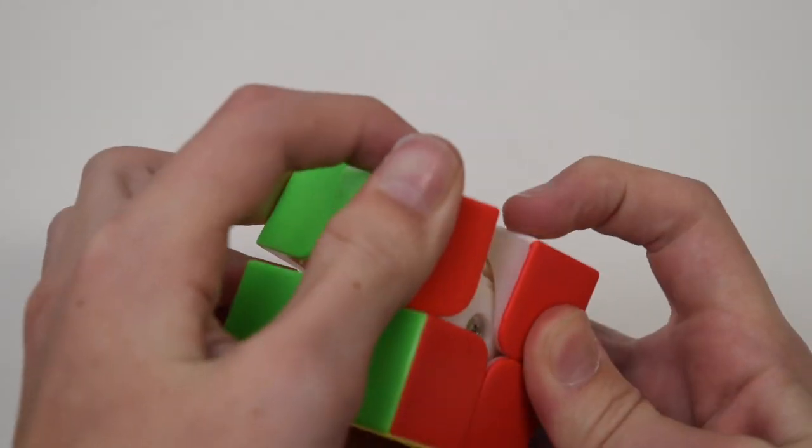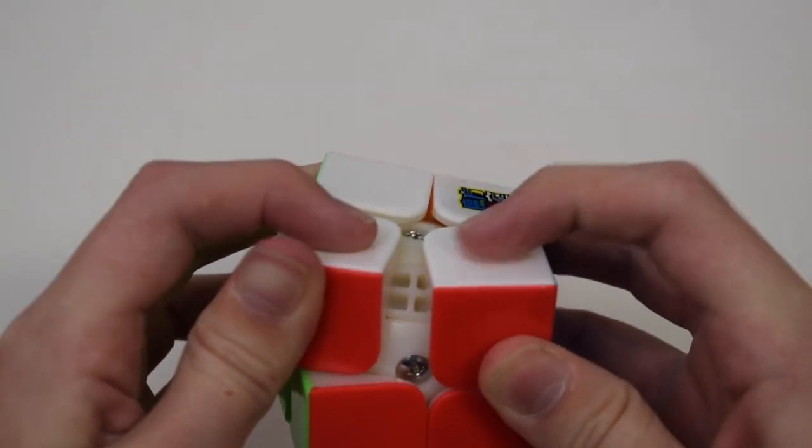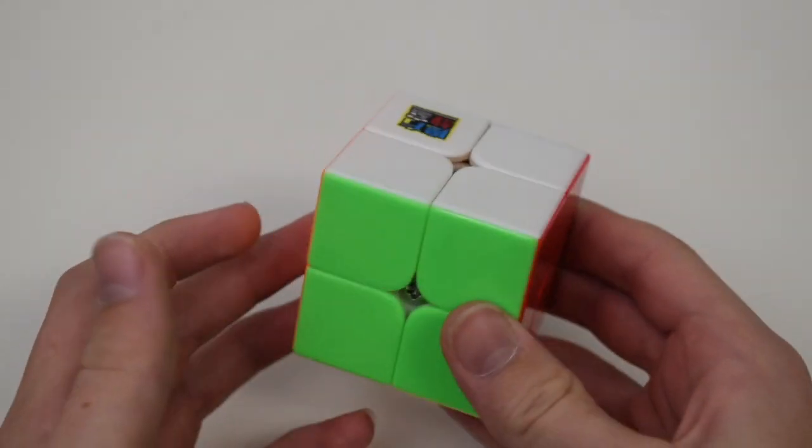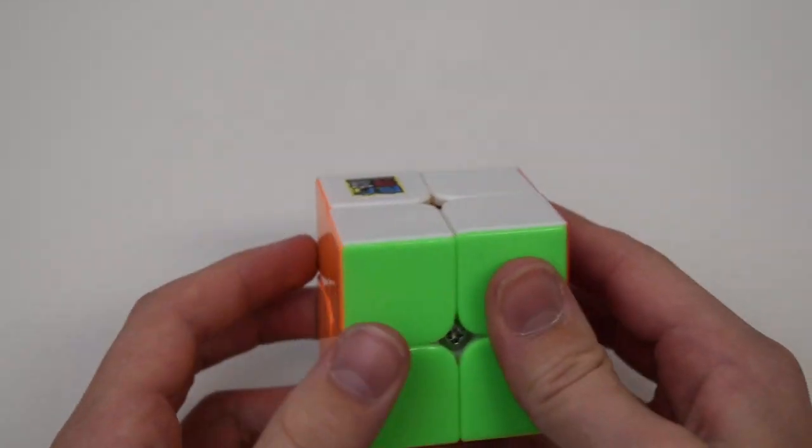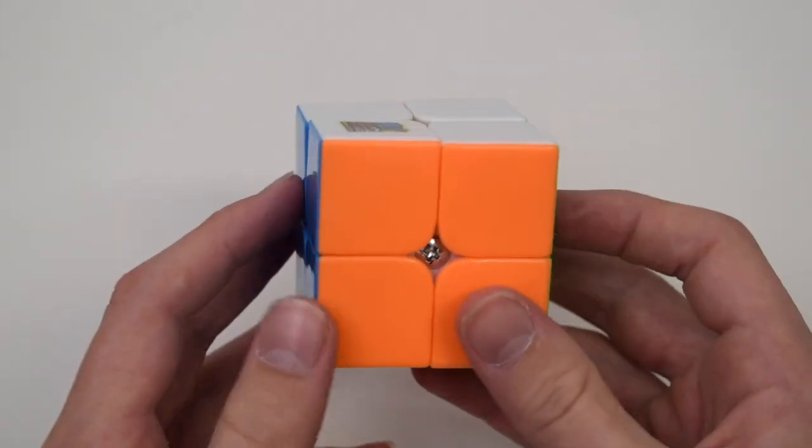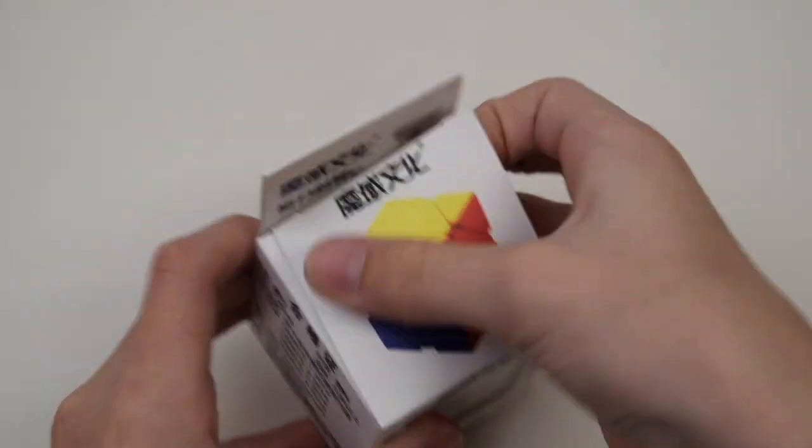It also has these primary internals right here, so these pieces are caps. So for only $5, I'm really impressed with this puzzle. It's very fast, very smooth, and it really has excellent corner cutting. Let's go ahead and get onto the scube.